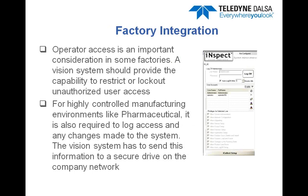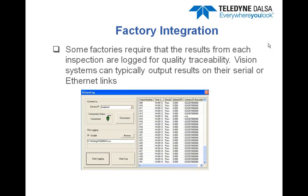Operator access is another important consideration in some factories. A machine vision system should provide the capability to restrict or lock out unauthorized user access. For highly controlled manufacturing environments such as pharmaceuticals, it is also required to log this access and log any changes made to the system. The results from each inspection are logged for quality traceability. Vision systems can typically output results on either serial or Ethernet links, or log the inspection data to a common data file — for example, logged to a local file in a CSV format.